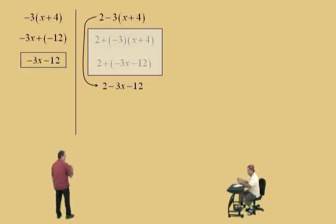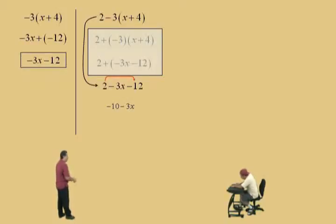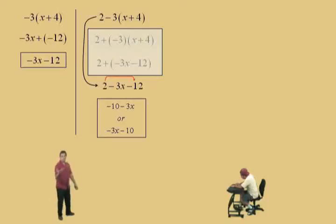So, once we get through that, then we look at our like terms, 2 subtract 12, right? And, which is negative 10 subtract 3x, or we generally put the variable first, and we have negative 3x subtract 10. Any answer, either of those two answers is correct.